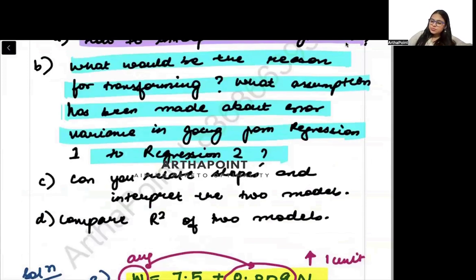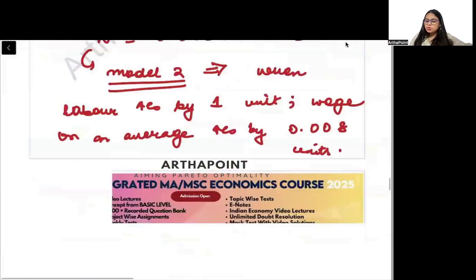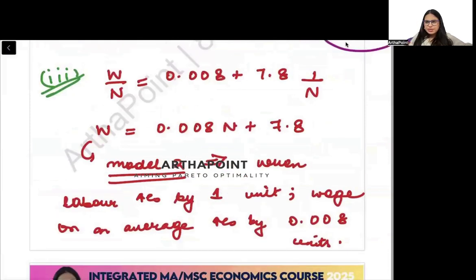Is this clear? We are doing this change because the reason is heteroscedasticity. Next part asks can you relate slopes and interpret the two models. What we can do now is begin with the second model and multiply by N throughout.